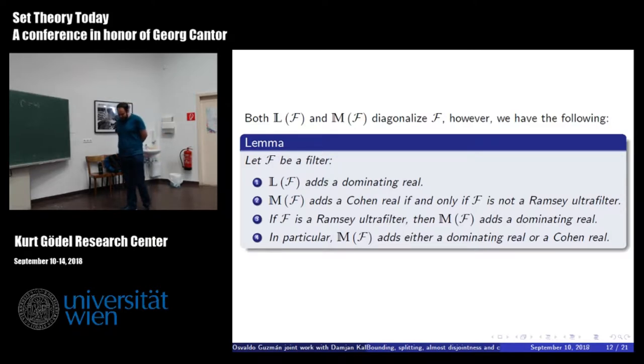A more interesting example was found by Kanajar, who proved that if you assume d equals c, there is an ultrafilter whose Mathias does not add a dominating real. However, it's possible to prove that M of F adds a Cohen real if and only if F is not a Ramsey ultrafilter. And if it is a Ramsey ultrafilter, it adds a dominating real. So in other words, M of F adds a dominating real or adds a Cohen real.